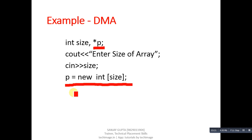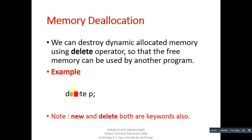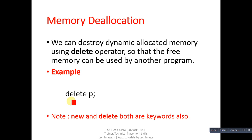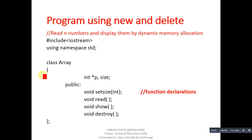After memory allocation, you also need to understand memory deallocation. We can destroy dynamically allocated memory using the delete operator, so that free memory can be reused by another program. You write the pointer's name along with delete to deallocate the memory at runtime. Note that both delete and new are keywords in C++.